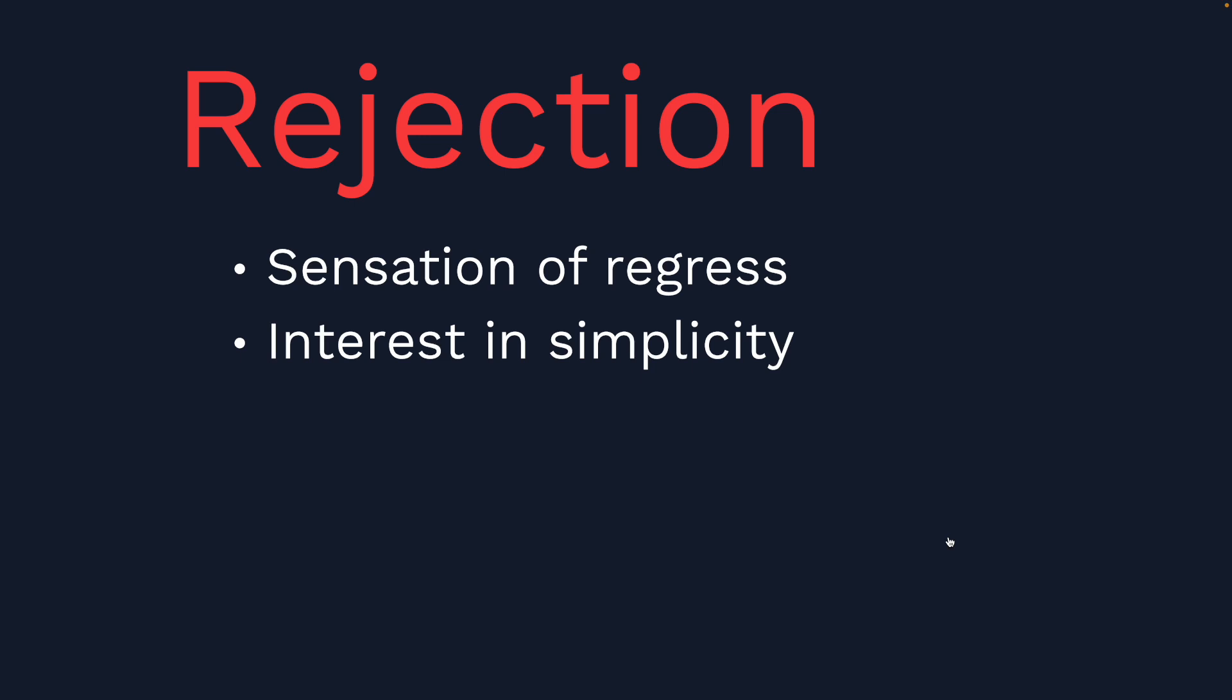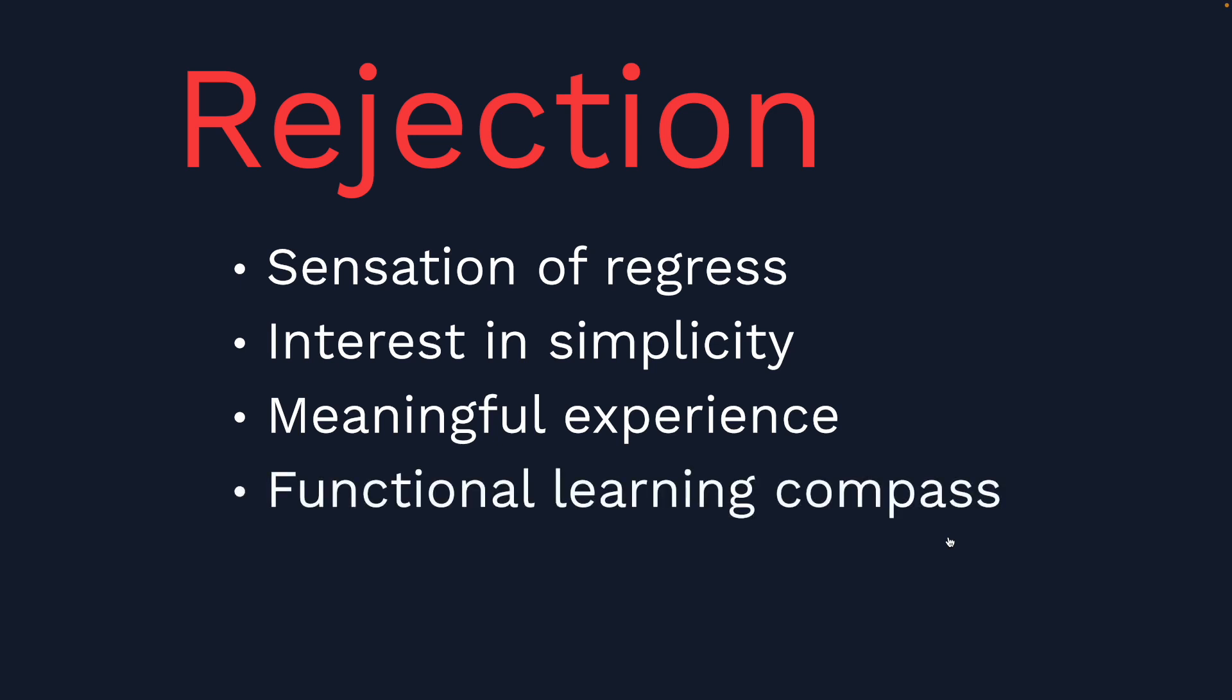Therefore, there is a tendency to dismiss additional complexity. Since at this point, there is meaningful experience, we have a functional learning compass, which means that it is very unlikely that we will learn new things that we are going to discard later. It can still happen, but at a definitely slower rate than when you're a beginner. It is easier to discard bullshit.